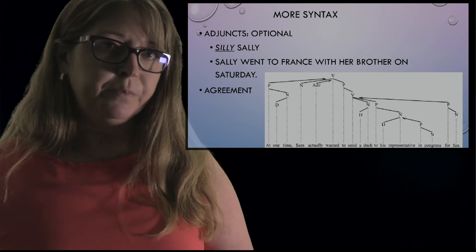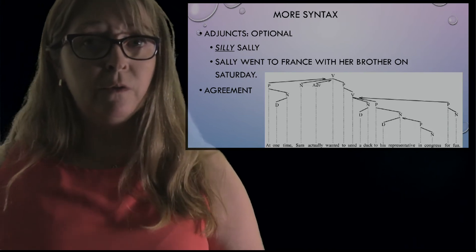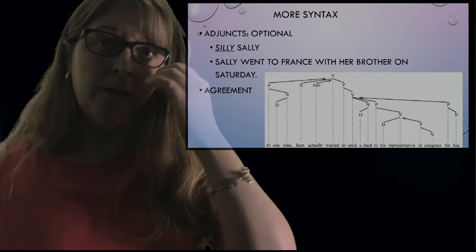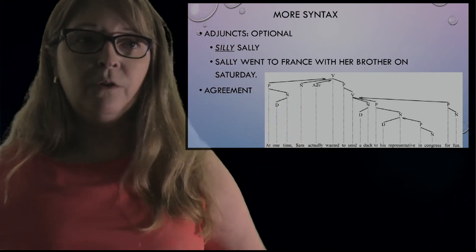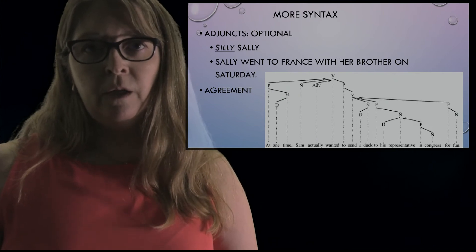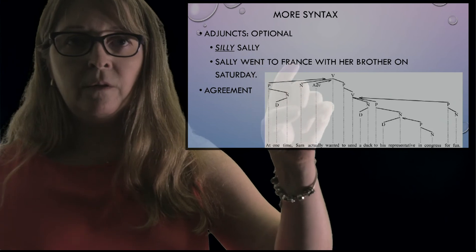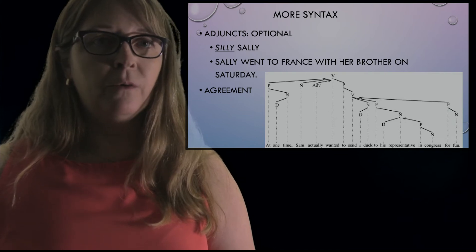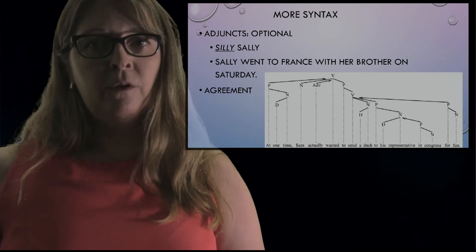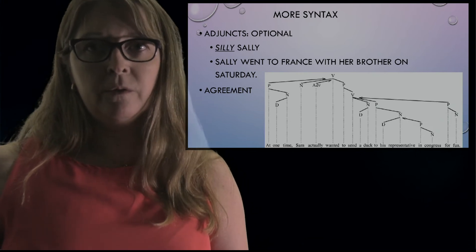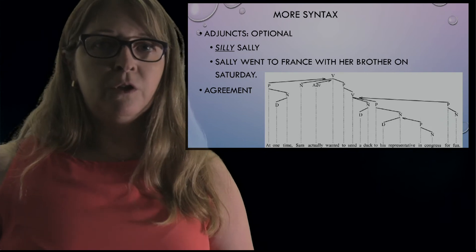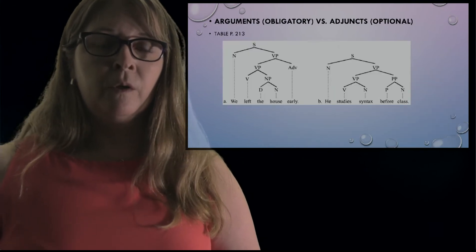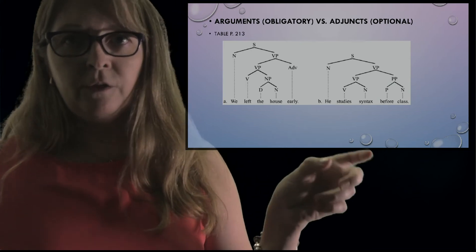Adjuncts are optional. 'Silly,' as I said, is optional — unless that's part of her actual name. For example: 'Sally went to France with her brother on Saturday.' Think about what parts of that sentence are optional. Agreement is also optional — as in 'her want flowers' instead of 'she wants flowers.' So arguments are obligatory, and adjuncts are optional.